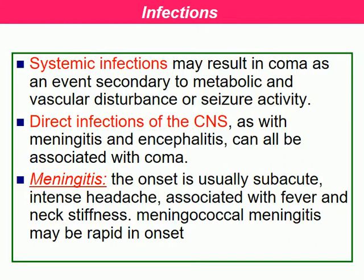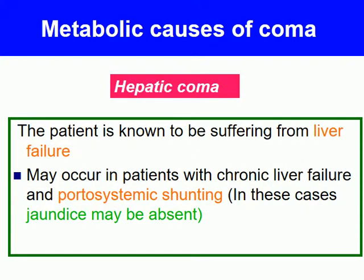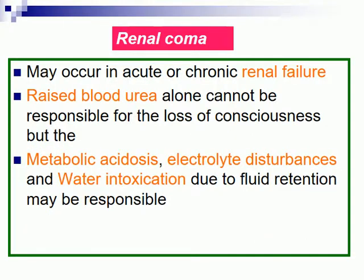Hepatic coma: the patient is known to be suffering from liver failure; it may occur in patients with chronic liver failure or porto-systemic shunting. Renal coma may occur in acute or chronic renal failure. Raised blood urea alone cannot be responsible for loss of consciousness, but metabolic acidosis, electrolyte disturbance, and water intoxication due to fluid retention may be responsible.